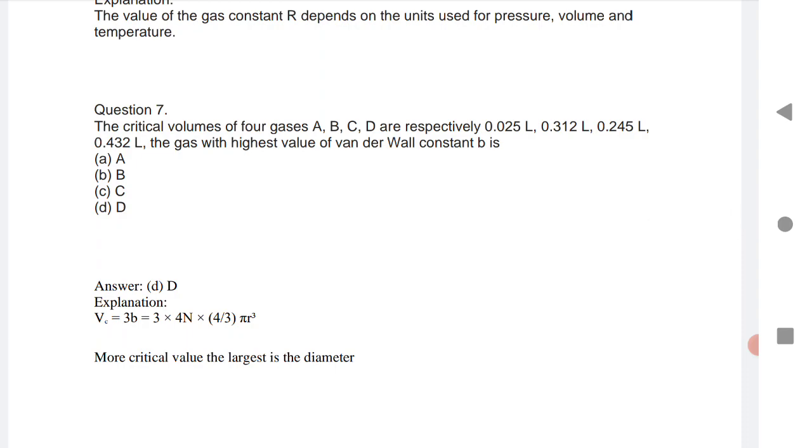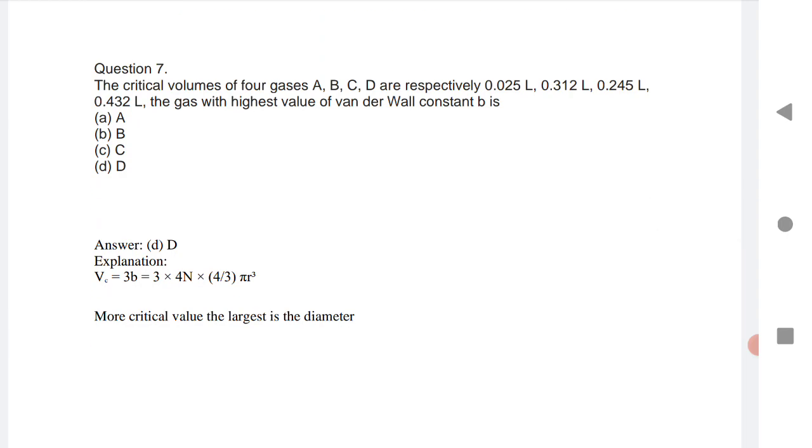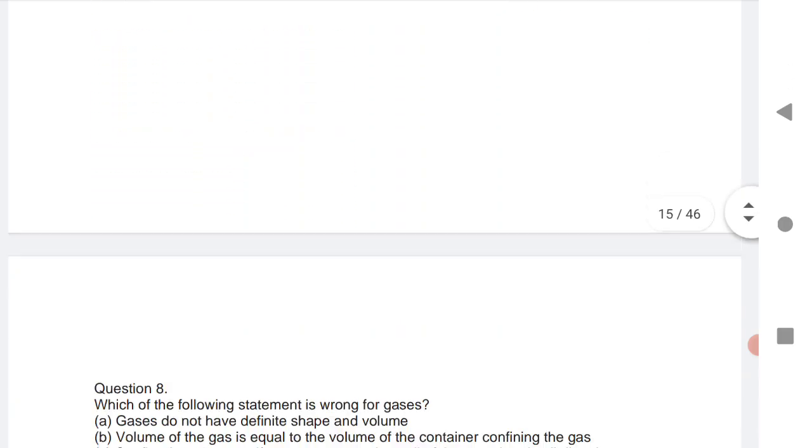Seventh one is: the critical volume of four gases - those volumes are given. One is 0.05 liter, 0.312 liter, 0.25 liter, and 0.443 liters. So more critical value, the largest is the diameter. What you need to find out? So the option is D. Why? Because the volume is more for option D. That's why the answer is D.